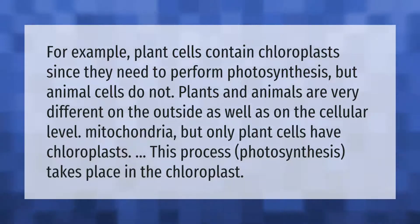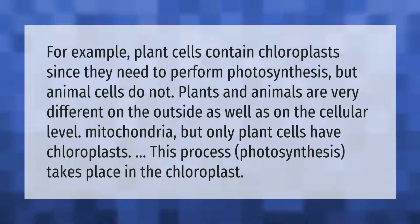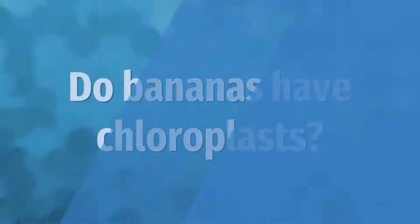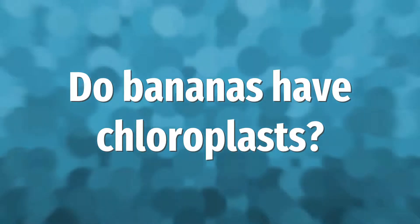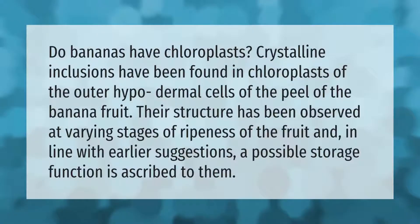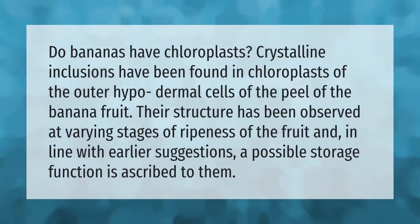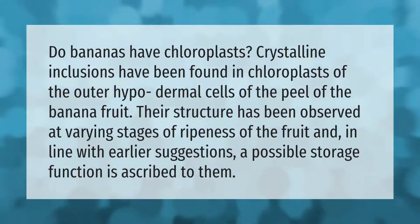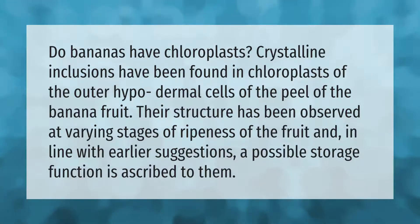Photosynthesis takes place in the chloroplast. Do bananas have chloroplasts? Crystalline inclusions have been found in chloroplasts of the outer hypodermal cells of the peel of the banana fruit. Their structure has been observed at varying stages of ripeness of the fruit, and a possible storage function is ascribed to them.